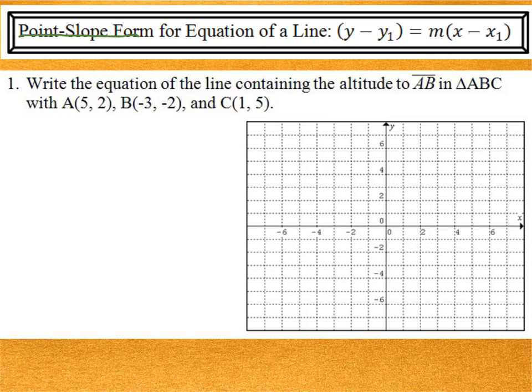So let's do that. I'm going to start at 5, 2, and I'm going to connect to negative 3, negative 2, and then up to 1, 5, and then back to where I started. So this is A, that's B, and that's C.